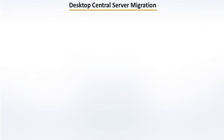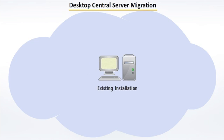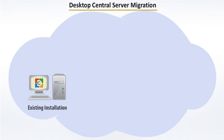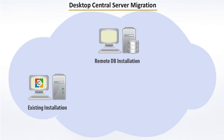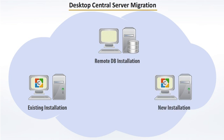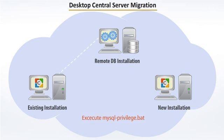In addition to this, if you are running the database separately, you should execute a script from the computer where the database server is running. Open a command prompt and navigate to the Desktop Central server MySQL directory. Execute the MySQL privilege batch file with the IP address of the new installation as the argument.